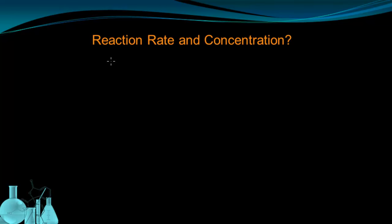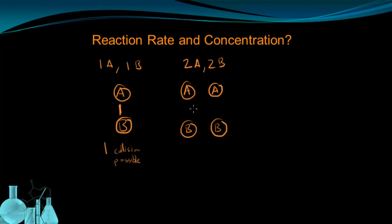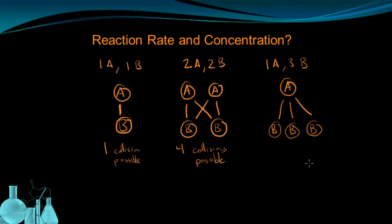Let's look at a few cases to see the relationship between reaction rate and concentration. If I have one molecule of A and one molecule of B, there is one possible collision. If I have two molecules of A and two molecules of B, I have four possible collisions. If I have one molecule of A and three molecules of B, I have three possible collisions. The number of possible collisions is a product of multiplying the number of reactant molecules: 1A × 1B = 1 collision, 2A × 2B = 4 collisions, 1A × 3B = 3 collisions. This leads to the law of mass action: for a single-step reaction, the rate is proportional to the product of the concentrations of the reactants.